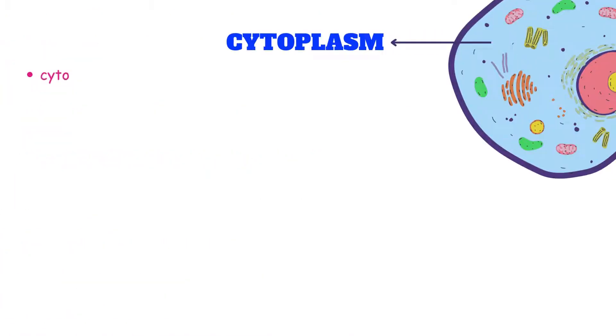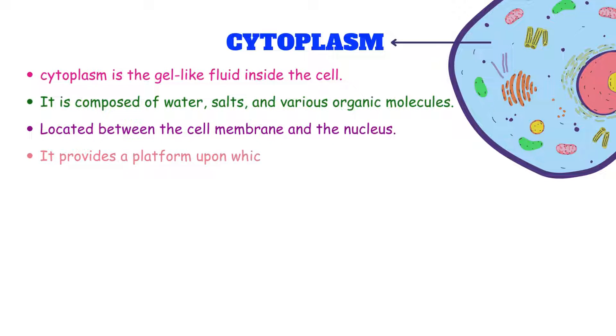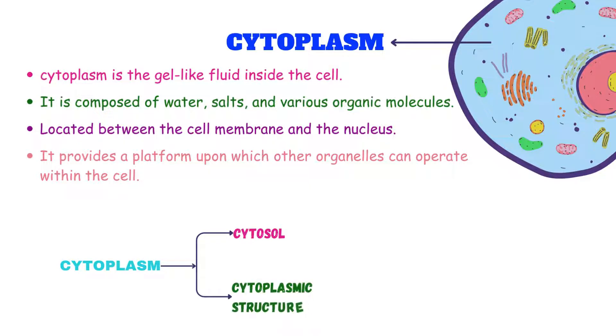Cytoplasm is the gel-like fluid inside the cell. It is composed of water, salts, and various organic molecules. It is located between the cell membrane and the nucleus. It provides the platform upon which other organelles can operate within the cell. Now, this cytoplasm is further distinguished into two parts. First is cytosol, which is an aqueous portion in the cytoplasm. It is a colloidal organic fluid or also called as matrix. The other part is a cytoplasmic structure, which consists of non-living and living structures. Now, this living structure is known as cytoplasmic organelles and those non-living structures of the cytoplasmic structure are known as inclusions.